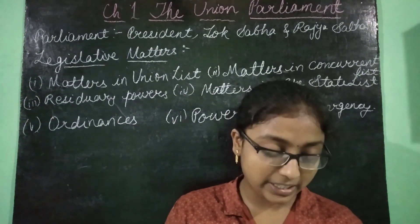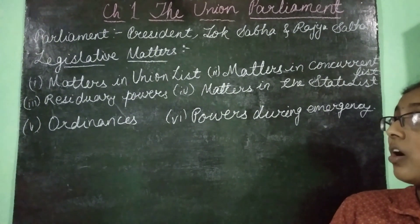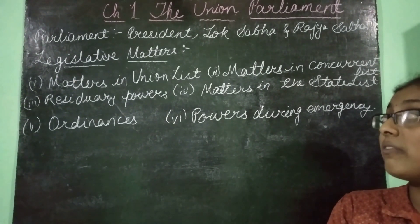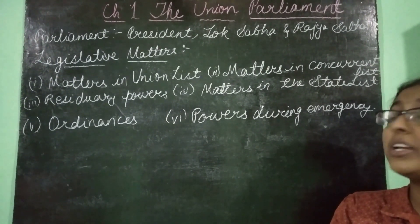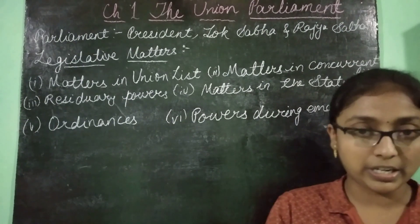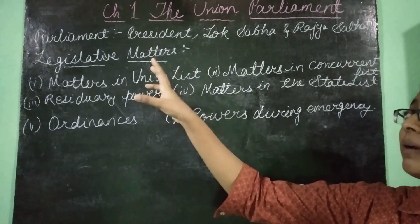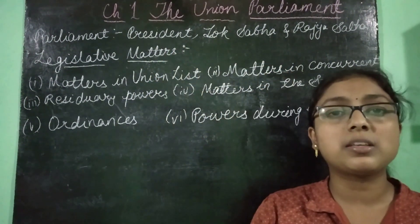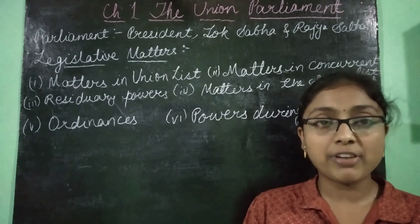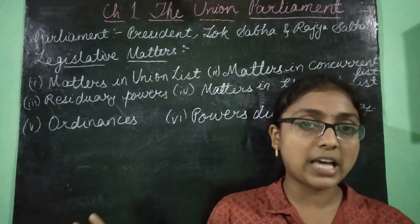The parliament can make laws on matters mentioned in the Union List. The Union List contains a total of 97 subjects, on which parliament — both houses — can make laws. Some important subjects include defense, communication, and foreign affairs, among many others.